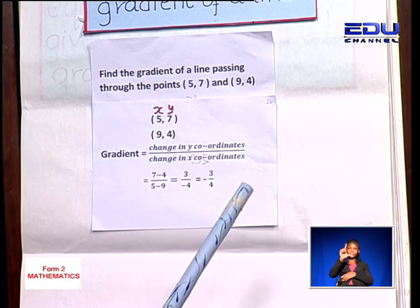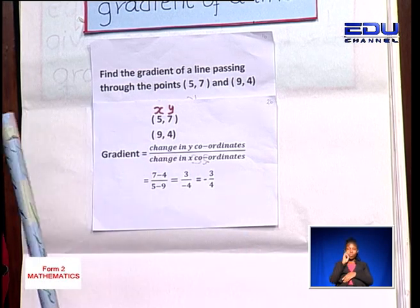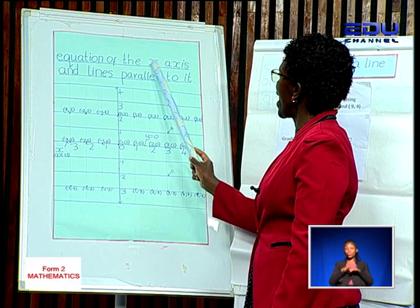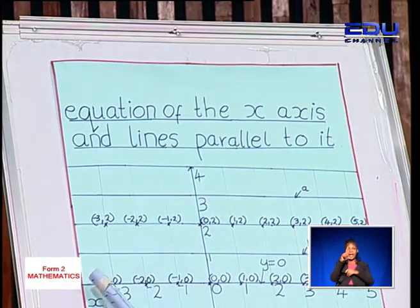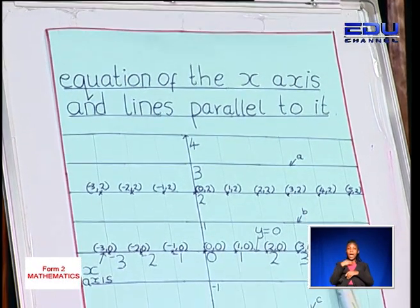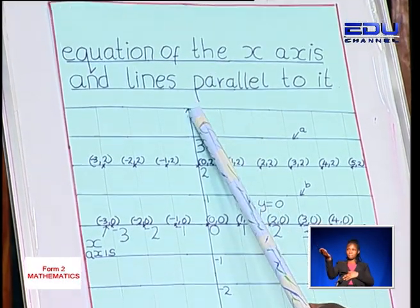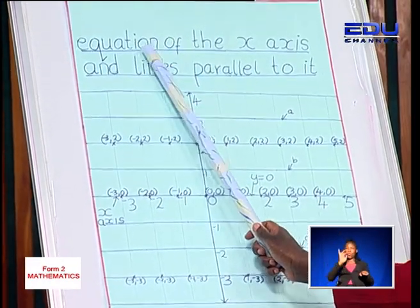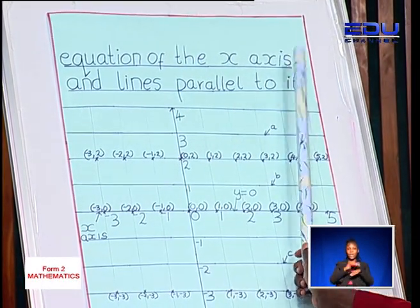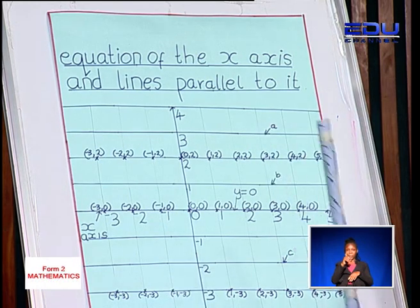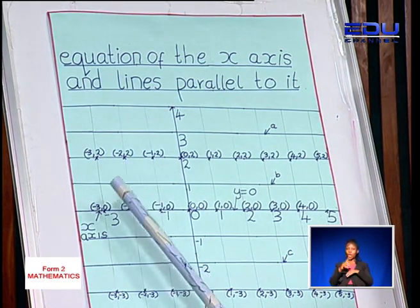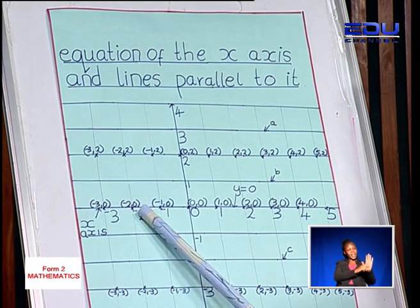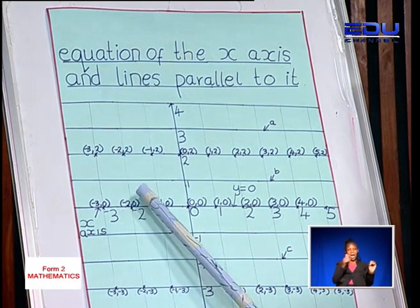Next, we are going to look at the equation of a line, and we'll start by looking at the equation of the x-axis. This is the x-axis and this is the y-axis. We want to get the equation of the x-axis. If we pick a few points on the x-axis: this point is negative 3, 0; another point here is negative 2, 0.